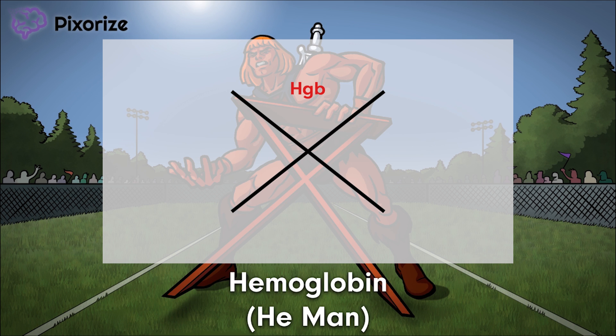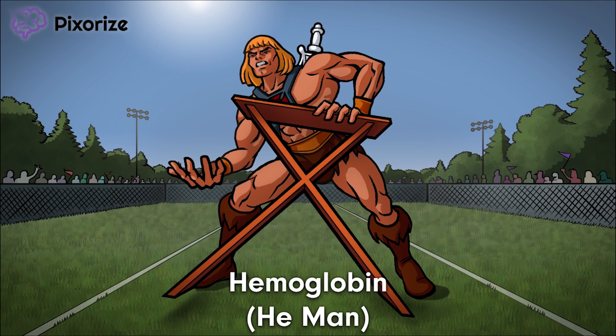As you probably already remember from school, hemoglobin is an oxygen-carrying metalloprotein found in red blood cells. Because it's found in red blood cells, changes in hemoglobin are more or less interpreted as changes in red blood cell counts — that is, if hemoglobin levels are low, your patient might have some sort of anemia or blood loss. In men, the normal range for hemoglobin is 13.5 to 17.5 grams per deciliter; in women, about 12 to 15. Just know that our He-Man is towering over the table to remind you that hemoglobin goes on top of the cross-shaped diagram.